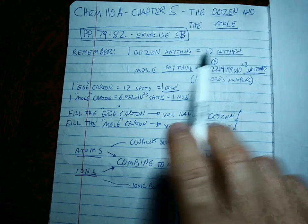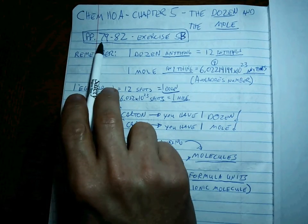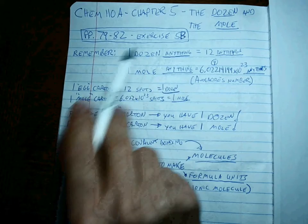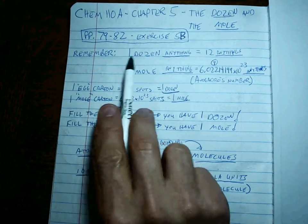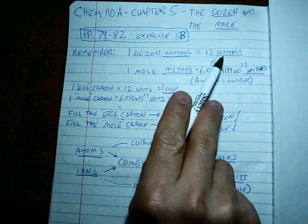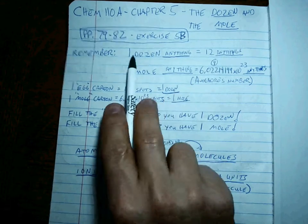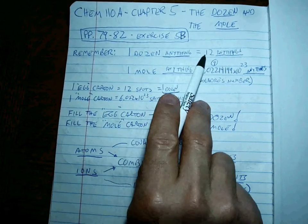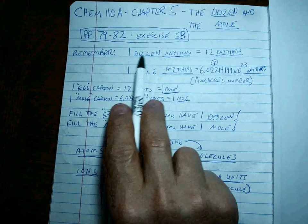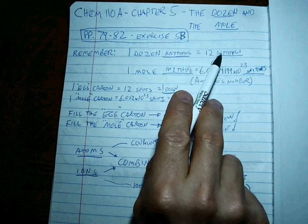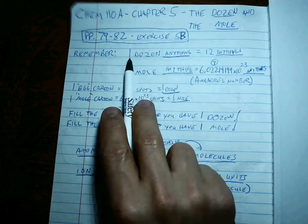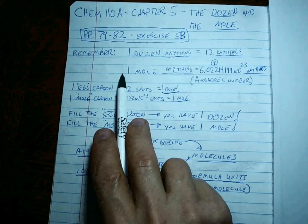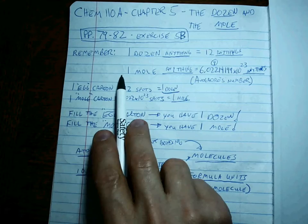We're working on pages 79 through 82, Exercise 5B. One dozen of anything is equal to 12 of those things, whatever it is you're counting. One dozen beers is equal to 12 beers. One dozen jello shots is equal to 12 jello shots. One dozen M&Ms is equal to 12 M&Ms. One dozen water molecules is equal to 12 water molecules. No confusion there.